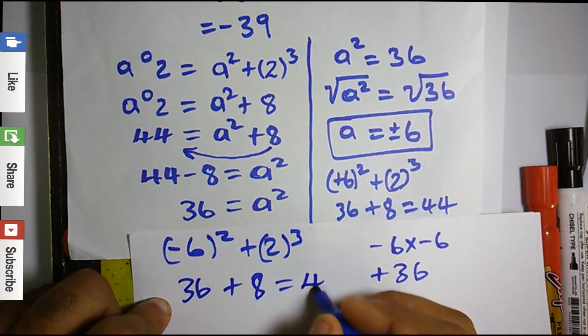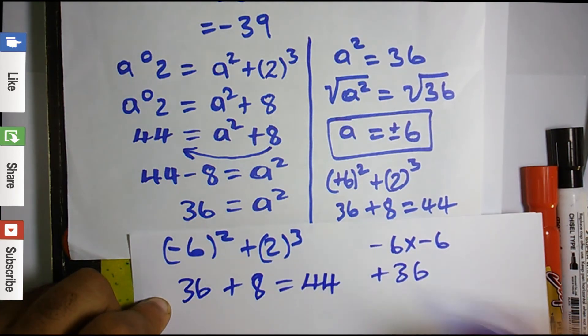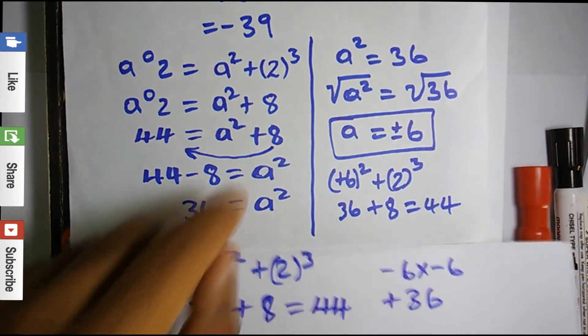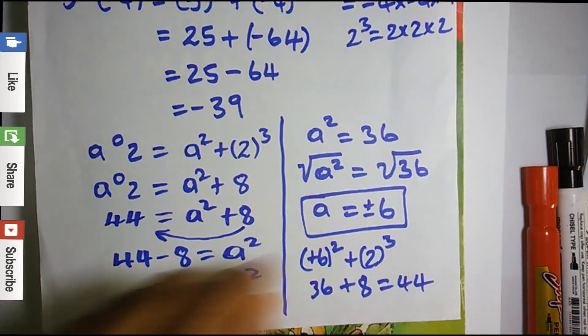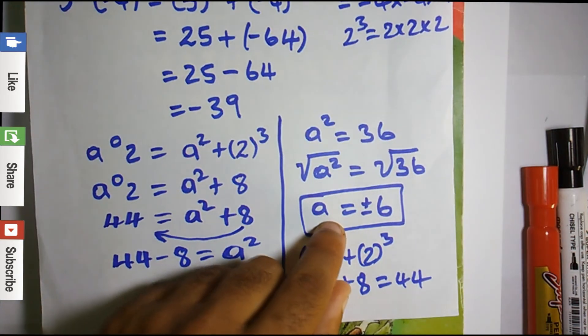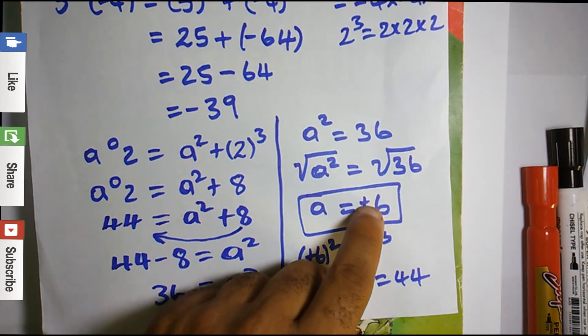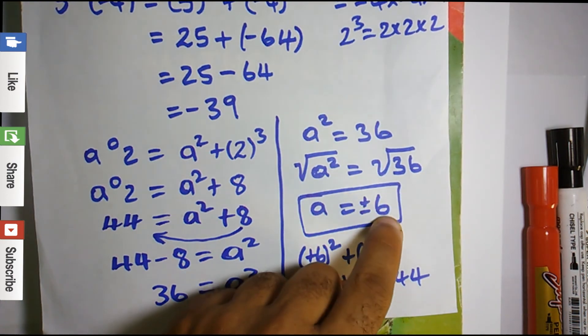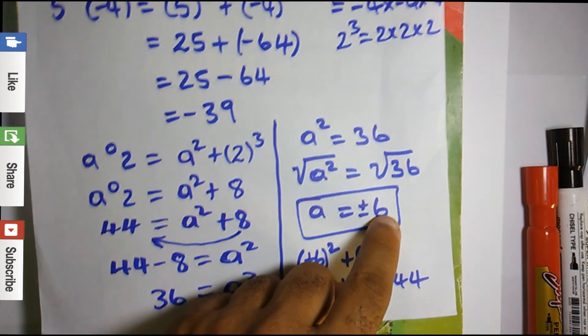Both values satisfy the equation. We have two values for 'a': negative 6 and positive 6.